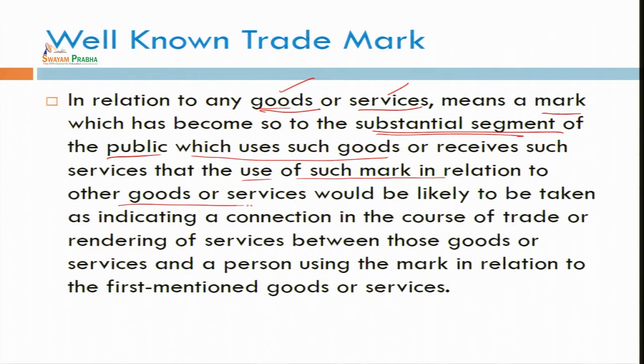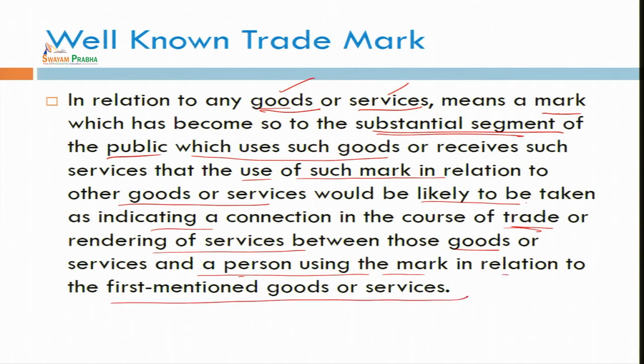Use of such a mark in relation to other goods and services would likely indicate a connection in the course of trade. We can take the example of Bata — everyone knows Bata deals with footwear. So if some person starts to use 'Bata' for curtains, the general public will be deceived and the goods will not be distinguished. We could have the misconception that those curtains are made by Bata, but a parallel manufacturer has started using the name Bata for curtains. Bata company filed a case and injunction was granted.